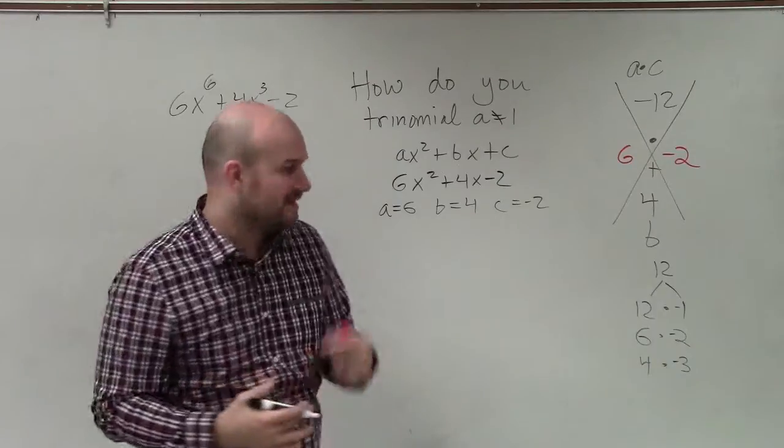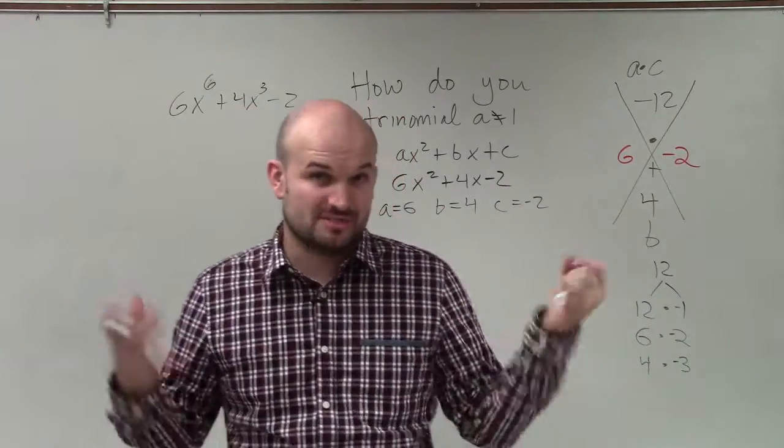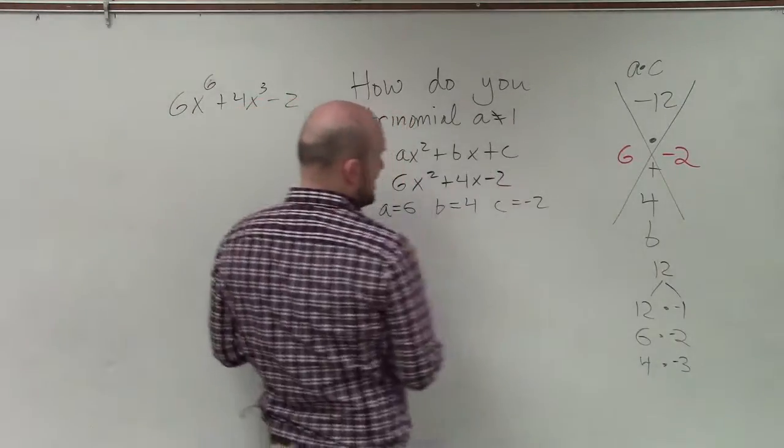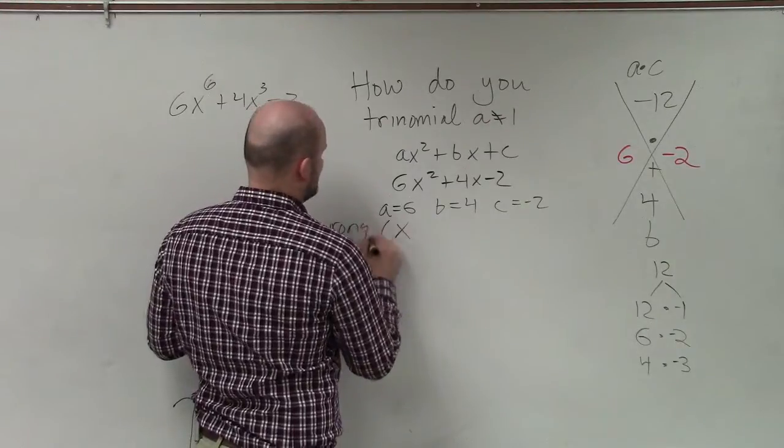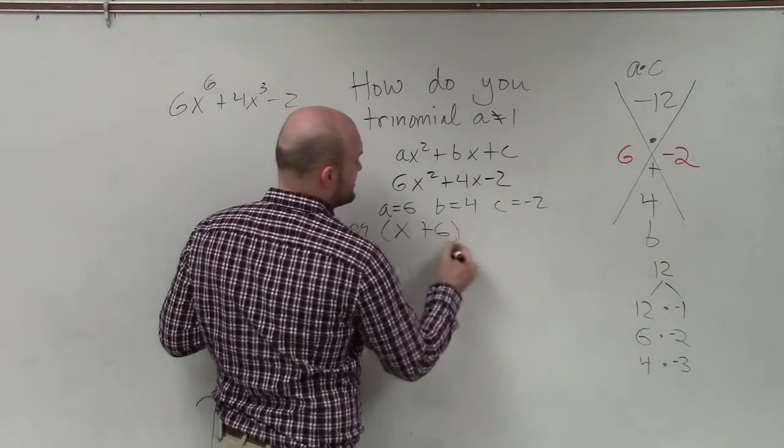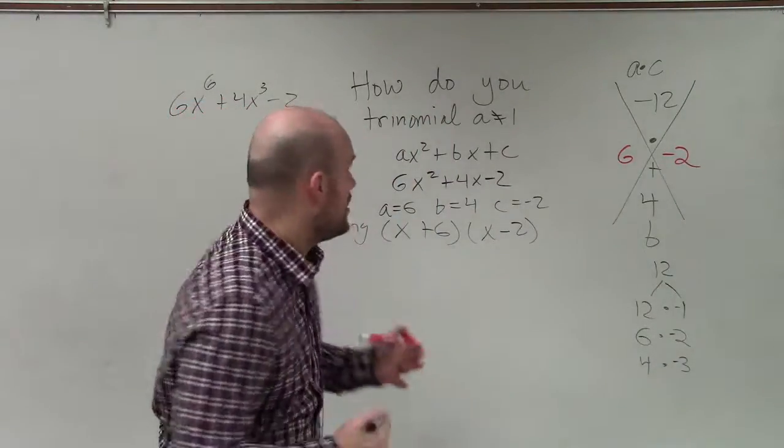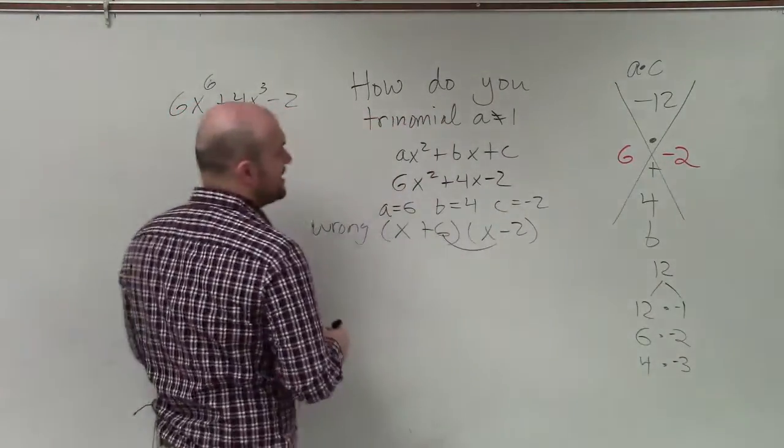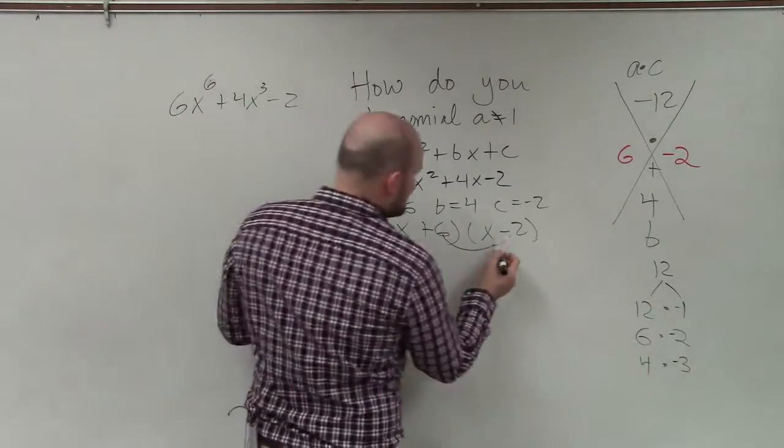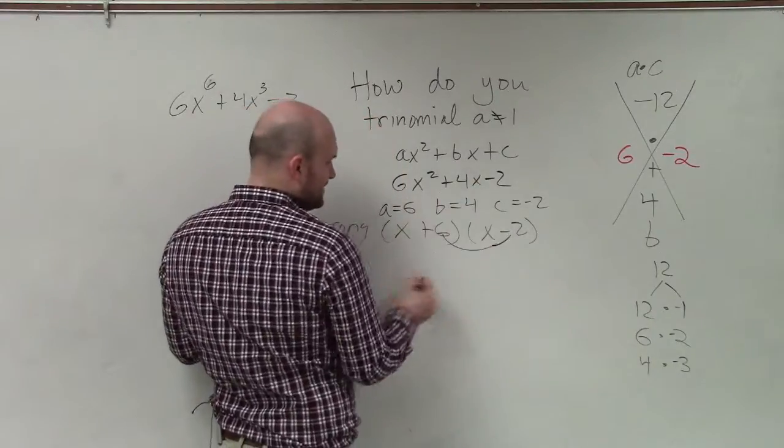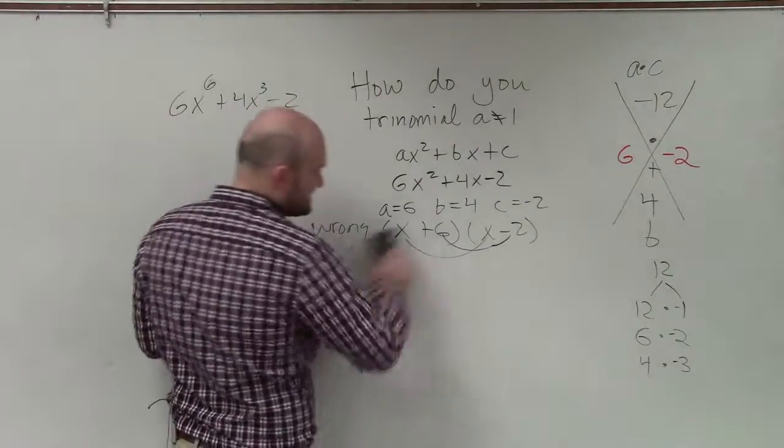So now what we're cased with is now writing down the two expressions, binomials, that are going to produce this trinomial. And the biggest mistake that students make is to say that (x + 6)(x - 2) is going to multiply to give us our product. And the reason why that's wrong is because 6 times negative 2 does not give us negative 2. And x times x gives us x², not 6x². So this is not going to work.